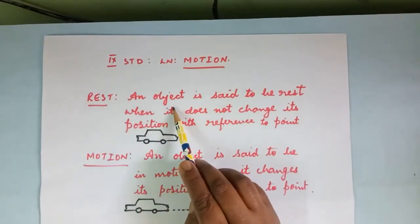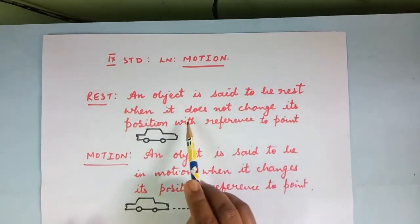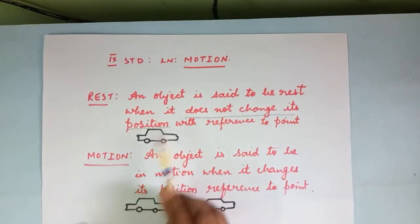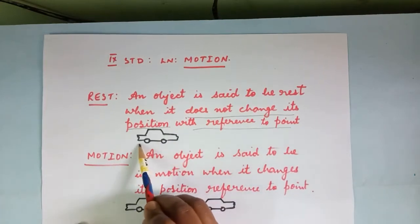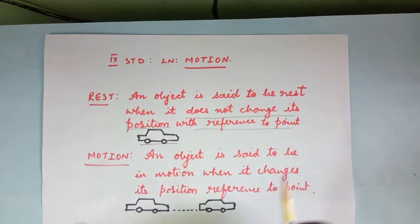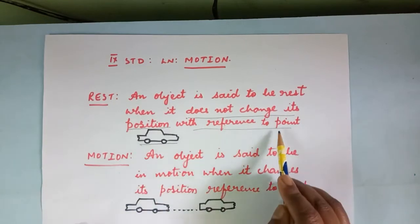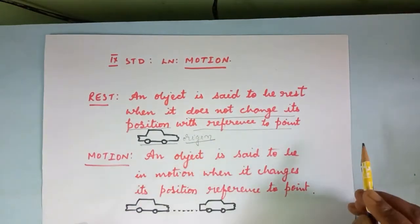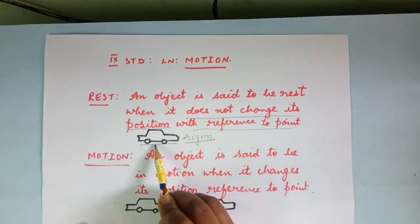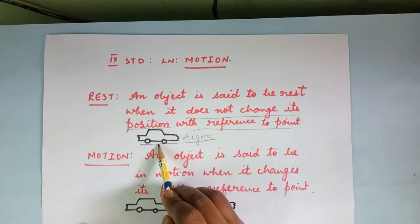Rest is something whenever an object is not changing its position, does not change its position with reference to the point. That means if you observe this vehicle, it is in one point, it is just static at one point. So in whichever place it is just static, that position we call it as point, referring to the point or the origin space. So if it has to move, it will move from this position to the other position. So if an object or a person or any body is not changing the position, then we call that state of an object as rest.